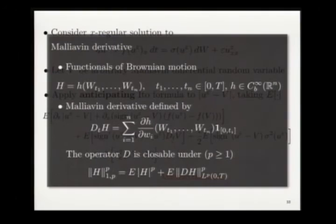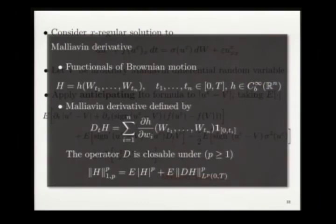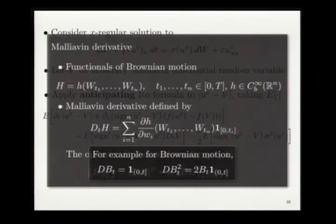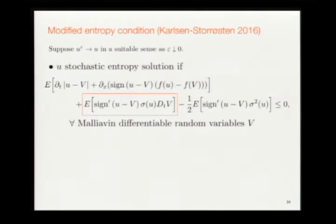The Malliavin derivative is defined analogously to Sobolev spaces: start with smooth cylindrical functionals of Brownian motion, define the derivative for these, and close by approximation. For example, the Malliavin derivative of Brownian motion is 1, and you have a chain rule: the Malliavin derivative of a Brownian motion squared gives the expected result. This is how Malliavin calculus is set up.